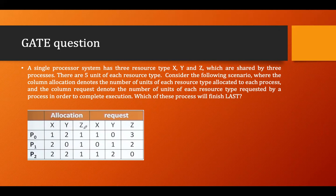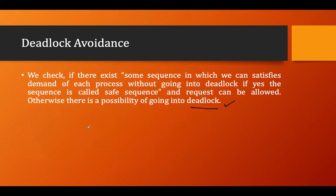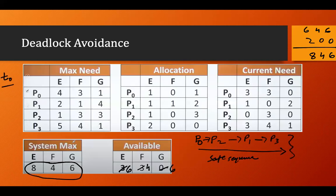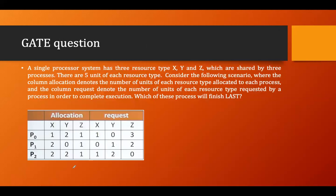This is a uniprocessor system, meaning one process at a time will execute. The system max here is five, five, and five for X, Y, and Z respectively — it is written that there are five units of each resource type in the system.